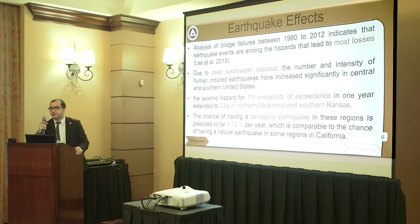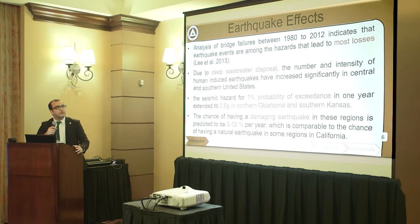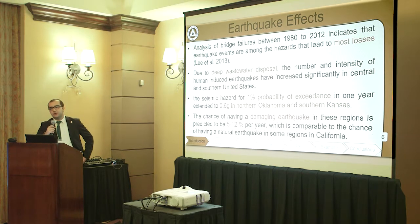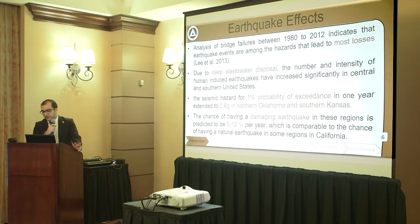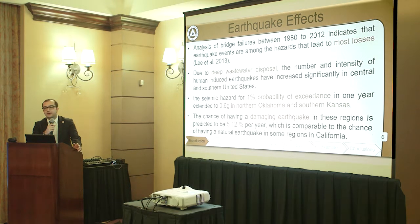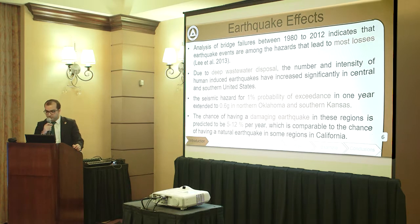In addition to corrosion, flood, and scour effects, we also have earthquake effects. Analysis of bridge failures from the 1980s to 2012 indicates that earthquake events are among the hazards leading to the most failures. In recent years, due to deep wastewater disposal in regions of Oklahoma, Texas, and Arkansas, we have seen an increase in seismicity. Now some places in Oklahoma have a chance of experiencing a damaging earthquake similar to parts of California — events our structures were not originally designed for.